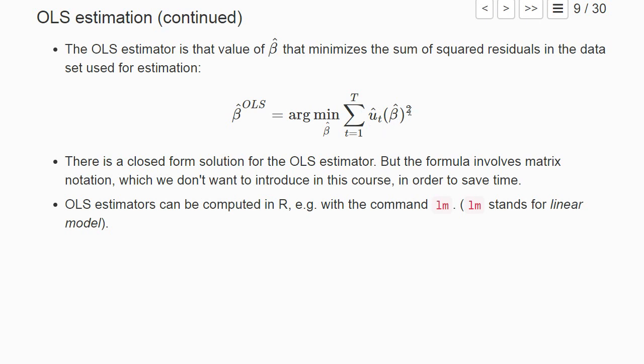We sum up the squared residuals for any beta hat and choose that vector of beta hat that minimizes this sum of squared residuals—that's the OLS estimator. One can solve this analytically and get a closed form solution for beta hat OLS, which involves matrix notation that I don't want to introduce in this course.